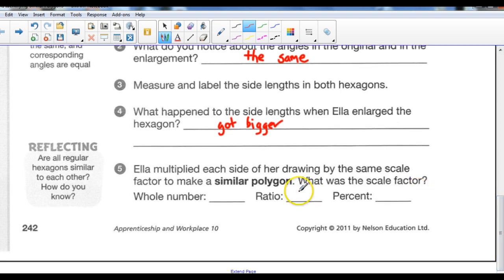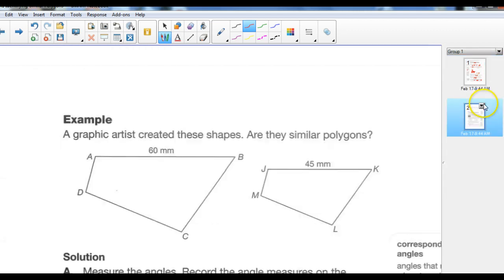The angles were the same, but the lengths got bigger. Now the question is, by how much? Well, Ella multiplied each side of her drawing by the same scale factor to make a similar polygon. What was the scale factor? Well, the whole number, she started out with 10. Her ratio was 3.5. She increased it by 3.5 to 1. Those two dots mean to 1. And 3.5 to 1 is a percent. Well, it's out of 100. So she increased it by 350%, because we just take that 3.5, we multiply it by 100, because that's what the word percent means out of 100, and that's 350.